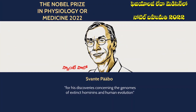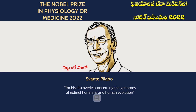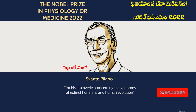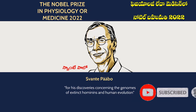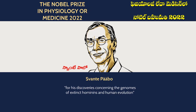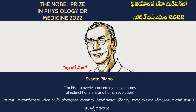The Nobel Prize in Physiology or Medicine 2022 was awarded to Svante Pääbo for his discoveries concerning the genomes of extinct hominids and human evolution.